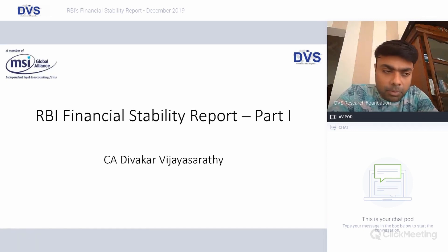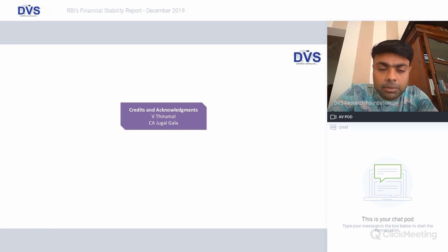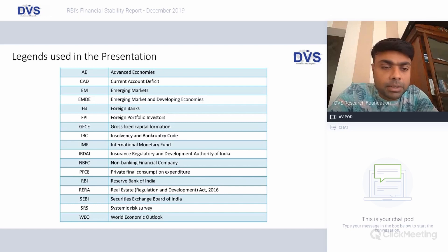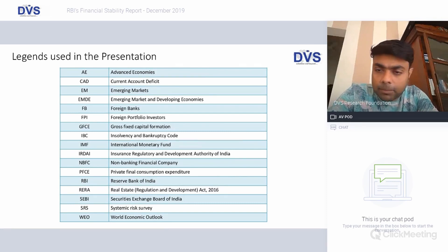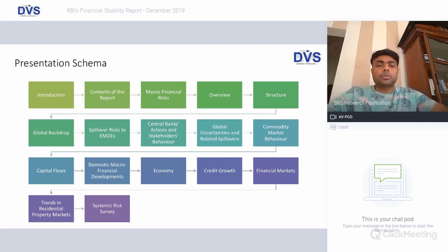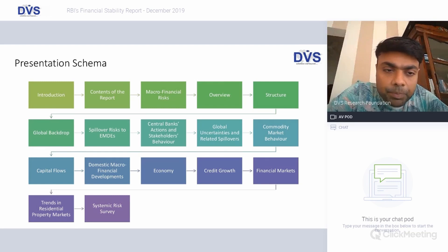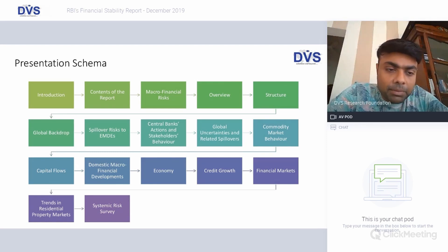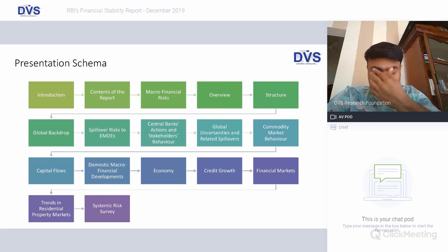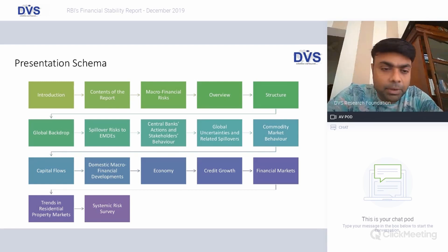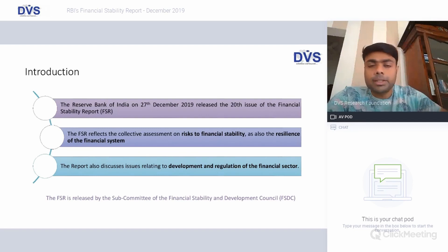We have split this entire report into two parts, and today's conversation is on part one of the report. First we shall look at why this report and what it primarily concerns, then the four main drivers: macro financial risks, the spillover risks, global uncertainty and commodity market behavior, and then look at specific sectors like credit growth, financial markets, and residential property prices — and finally conclude with a systemic risk survey output.